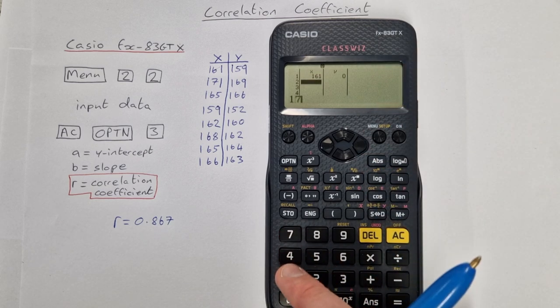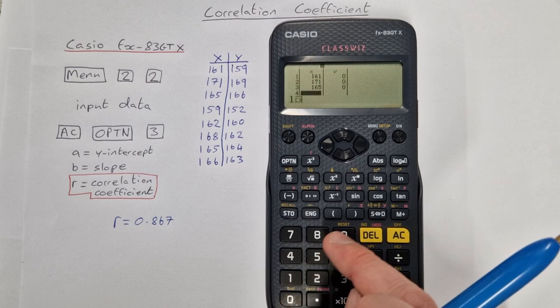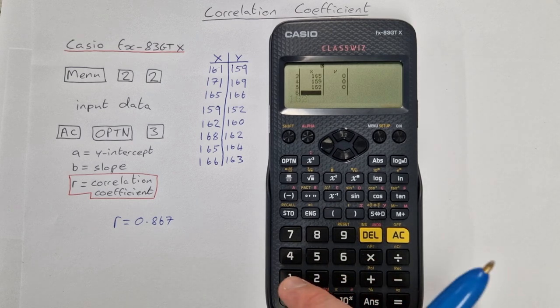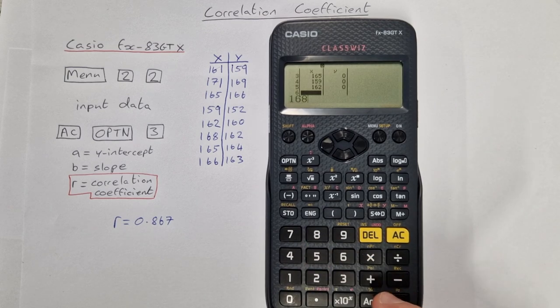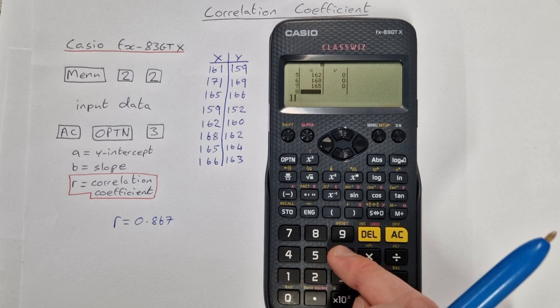Do all the x's first: so 171 equals, 165 equals, 159 equals, 162 equals, 168 equals, 165 equals, and 166 equals.